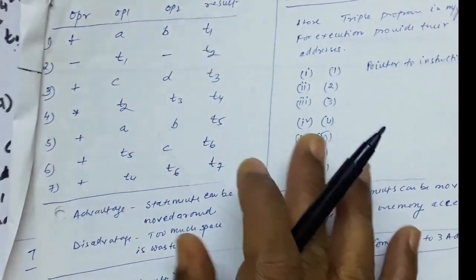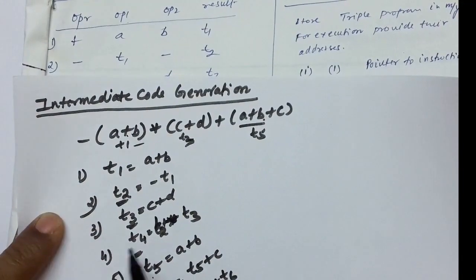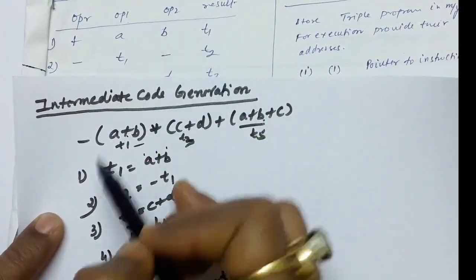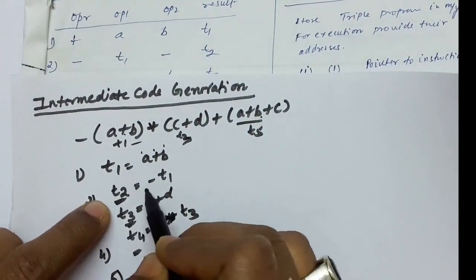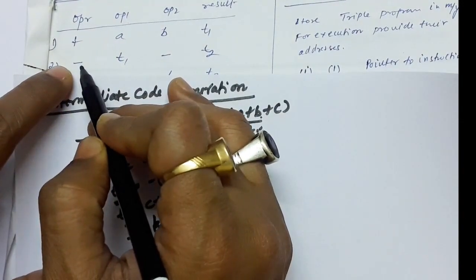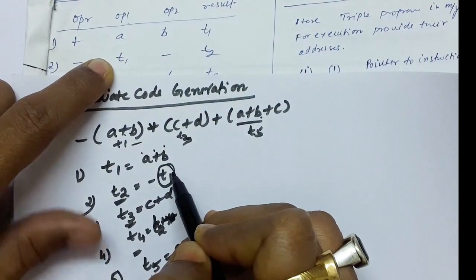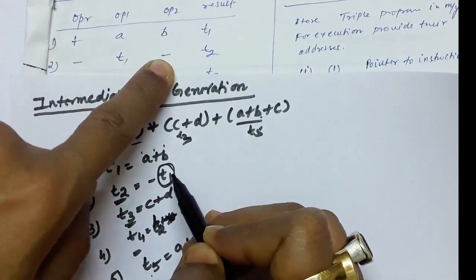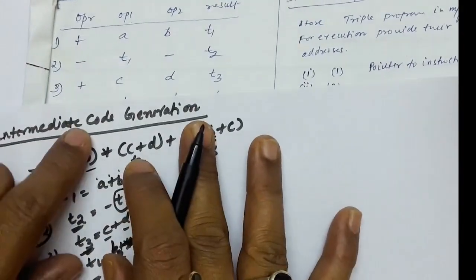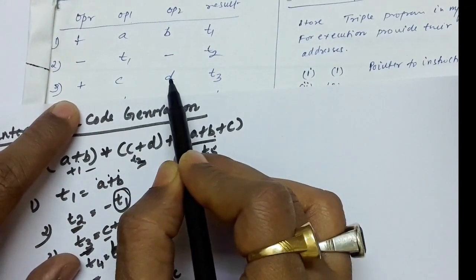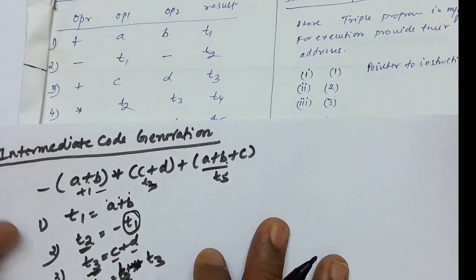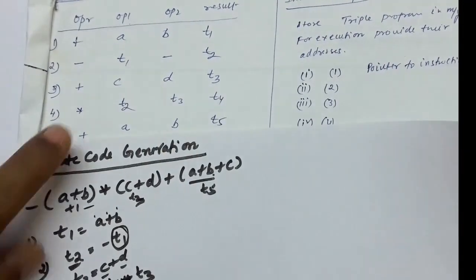So t1 equals a plus b: operation plus, operands a and b, result t1. For t2 equals minus t1, the operation is minus (negation), with only one operand t1, no second operand (dash), and result t2. For t3 equals c plus d: operation plus, operands c and d, result t3. For t4 equals t2 multiplied with t3: operation multiply, operands t2 and t3, result t4.